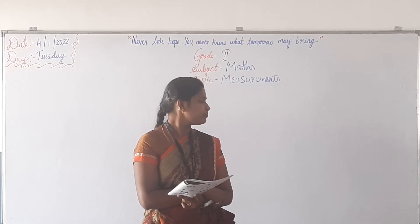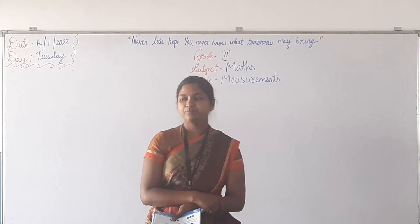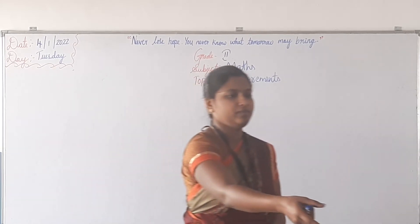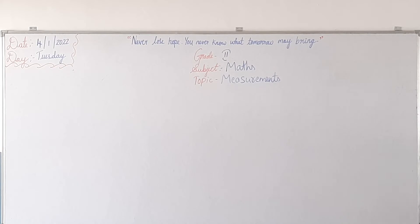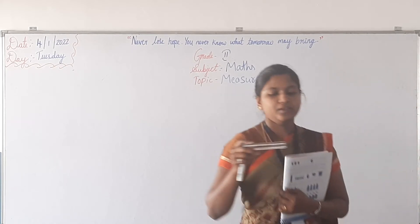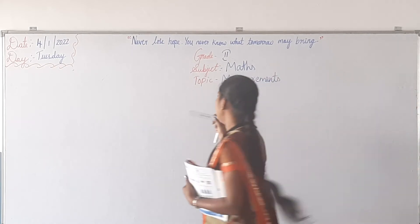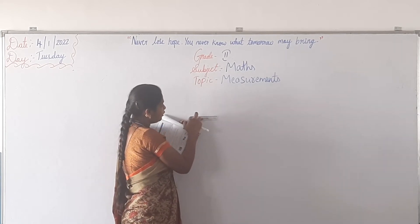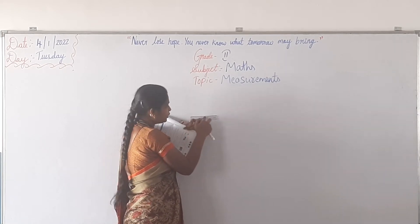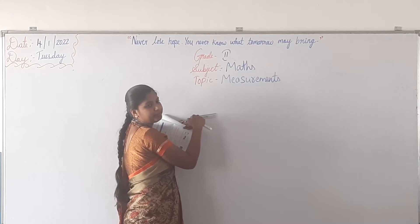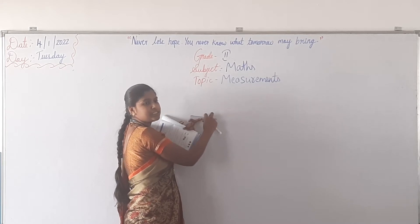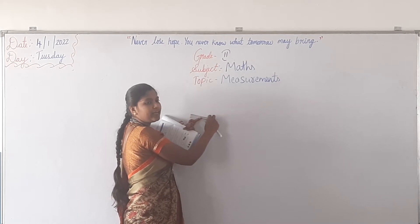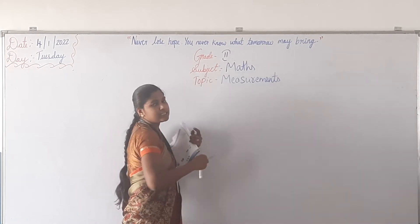How will you draw a 6 cm line? Give me a scale. You have a scale, so you have to place the scale on the paper like this. From 0 to 6, you have to draw a line. This is how we draw a 6 cm line — from 0 to 6 we draw a line, meaning you have drawn a line of 6 cm.